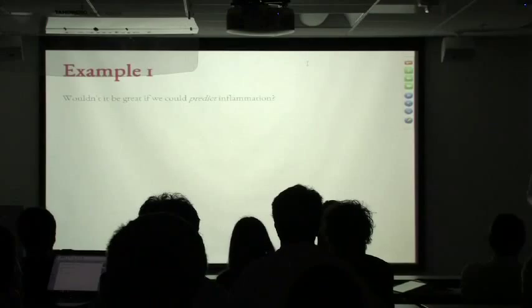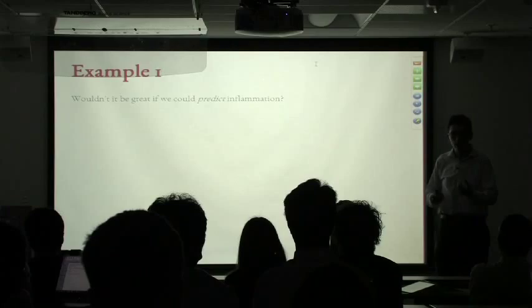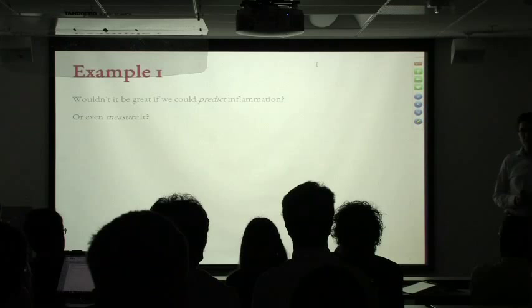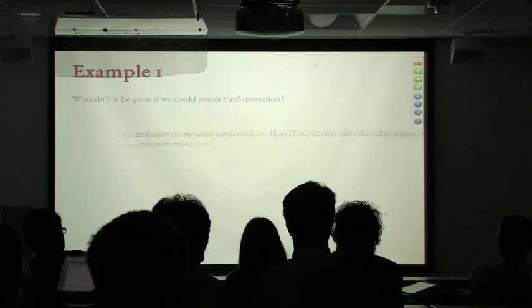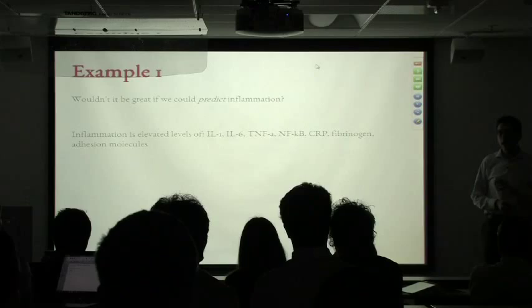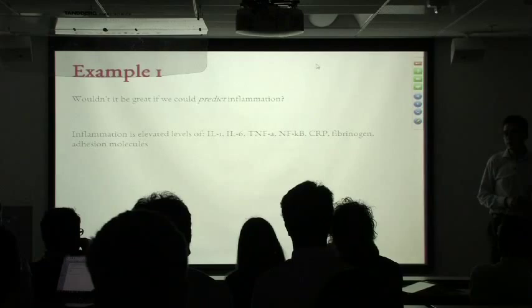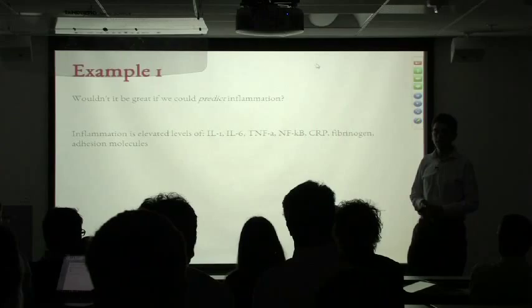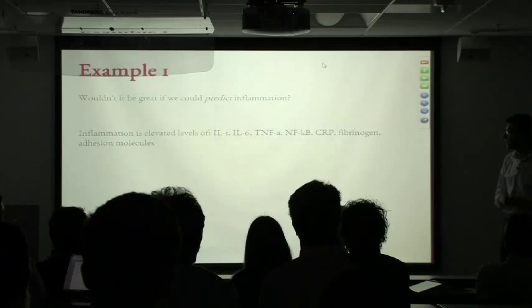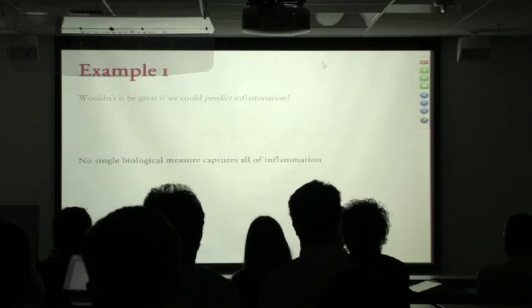Inflammation is important because wouldn't it be great if we could predict it? If it has all these relevant health outcomes, it would be nice to figure out if it's going on before it becomes an issue. But if we're going to predict it, we first need to measure it. Inflammation is not one thing — you can't take a thermometer and say this person's inflammation level is 98. We assume it's going on if you have increased measures of things like interleukin-1, interleukin-6, TNF-alpha. There are lots of different ways to measure this complex biological process.